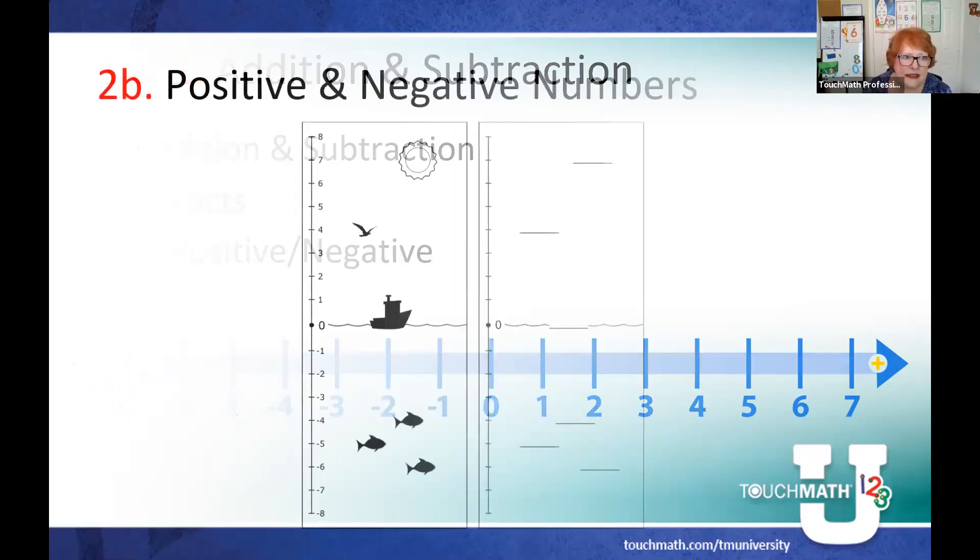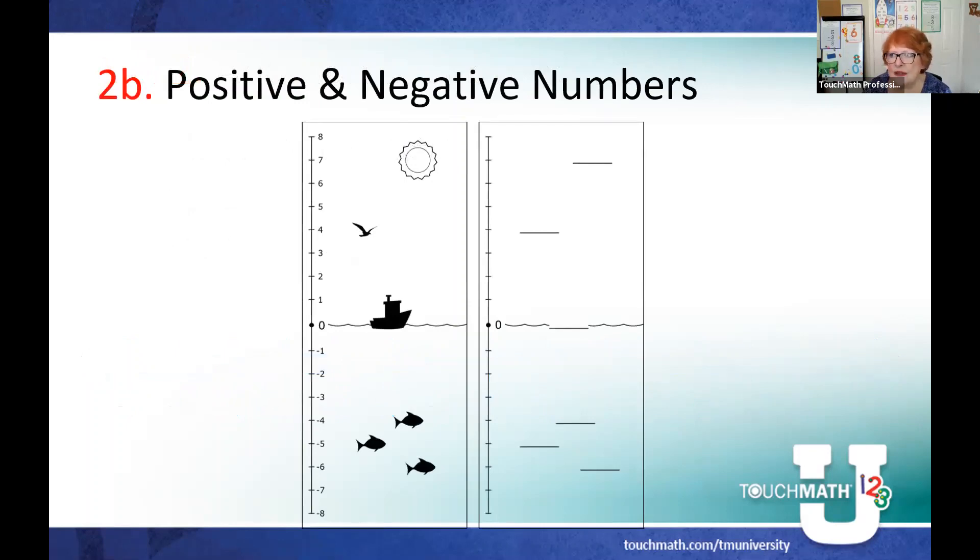This next example is showing positive and negative numbers. Now this is an example actually out of the upper grades TouchMath kit in the activity sheets. And so you'll notice that zero is the water line, anything below zero is underwater, anything above zero is in the air. So it uses the vertical number line to demonstrate positive and negative numbers.